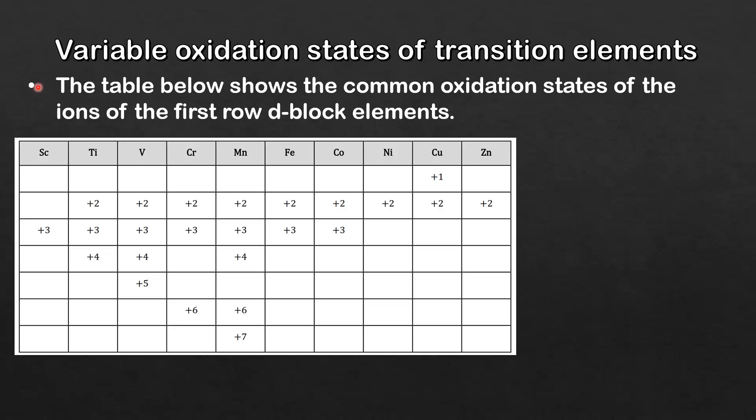The table below shows the common oxidation states of the ions of the first row d-block elements. The first row d-block elements include the elements from scandium to zinc. However, zinc is not considered a transition element, so from now on I'm going to blank out the zinc column.